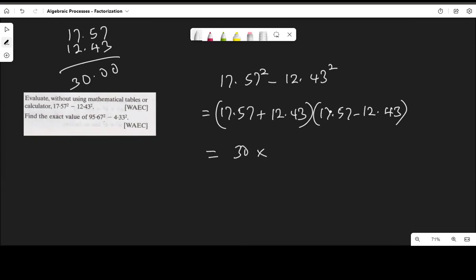Now multiply by 17.57 minus 12.43. Calculating the subtraction: 7 minus 3 is 4, 5 minus 4 is 1, 7 minus 2 is 5, and 1 minus 1 equals 0. This gives us 5.14.